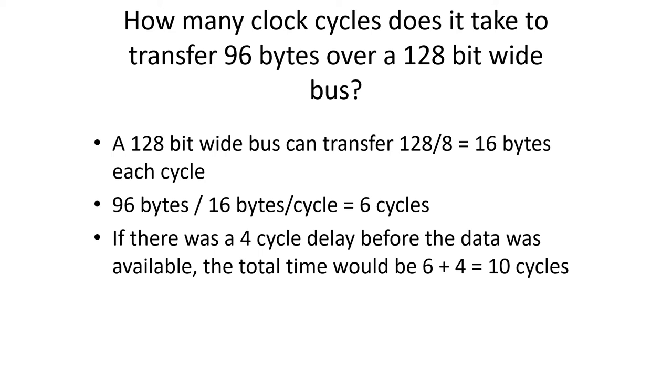But most memory systems have a delay between when the CPU first gives it the address and when the data is available. So if there was a 4 cycle delay, meaning the transfer started on the 5th cycle, then we would add the 4 cycles to the 6 and get a total of 10 cycles to get the information to the CPU.